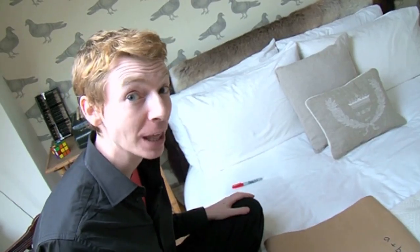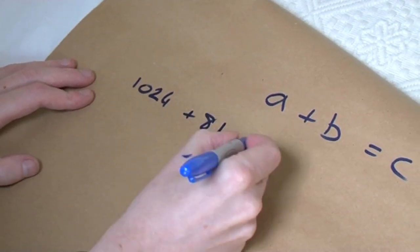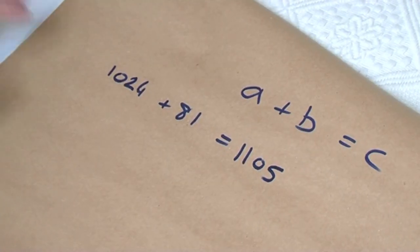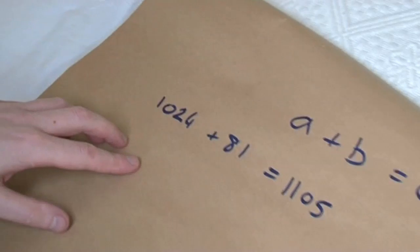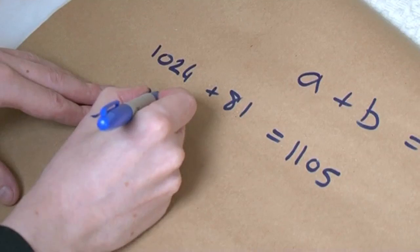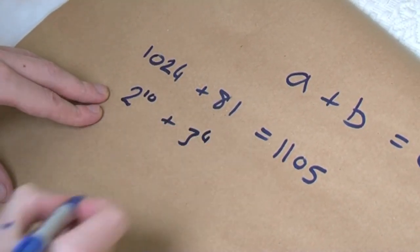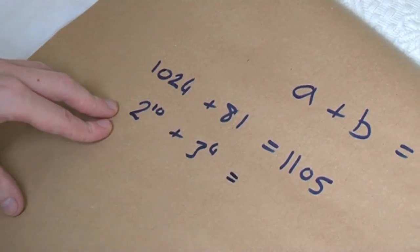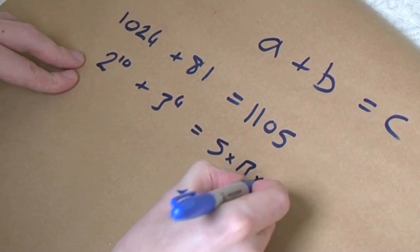Let's try an example that works: 1,024 plus 81 equals 1,105. Now let's just check they don't share any factors. In fact, I picked these on purpose. This one is 2 to the power 10, and this one is 3 to the power 4. So they don't share any factors there. And this one is 5 times 13 times 17.